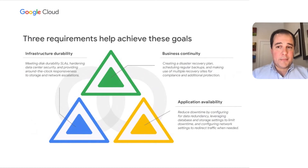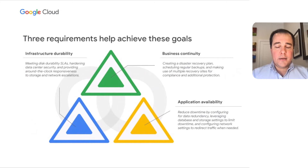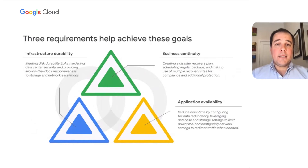Next up is application availability, which leans toward the high availability goal, because we're thinking about how to keep a database up and running for your transactional applications, or how to move traffic to the right node or even region within a distributed application. A great product-level example is our high availability configuration for Cloud SQL, our managed database offering. It lets you set up an architecture designed to limit user impact if the primary database instance fails. Last but not least is business continuity. We view this as a core component for both linked goals, because this is all about planning, checking, and double-checking that you have an infrastructure safety net.